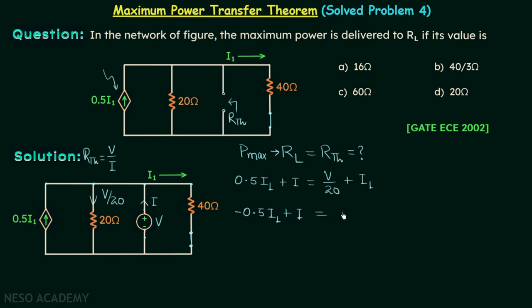Now we can write i1 equal to V/40. We have replaced i1 by V/40 because we want V and I in the equation - we want to find V/I. Now this becomes -0.5(V/40) plus I equals V/20, or -V/80 plus I equals V/20.